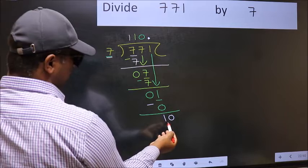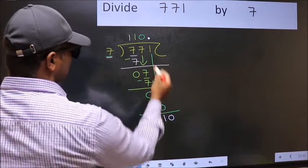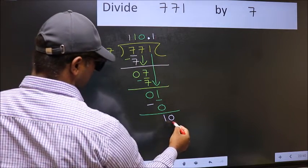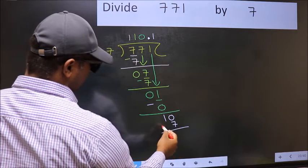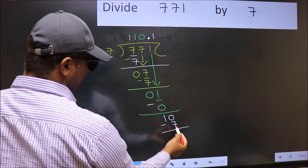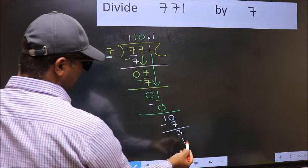So 10. A number close to 10 in the 7 table is 7 once is 7. Now you should subtract. 10 minus 7 is 3. And continue that division.